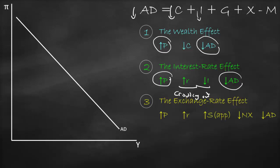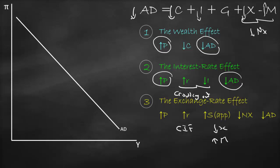The third effect is called the exchange rate effect. Higher prices lead to higher interest rates. A relatively high interest rate means we will have capital inflow — foreigners will prefer to deposit their money here in Australia. Therefore our currency will appreciate, making our goods relatively more expensive, so exports will decrease. Foreign goods become relatively cheaper, so imports will increase. Consequently, net exports will be lower, aggregate demand will be lower, giving us a negative relationship between inflation and aggregate demand.